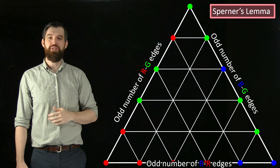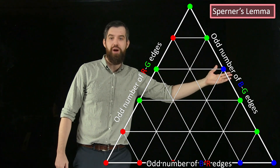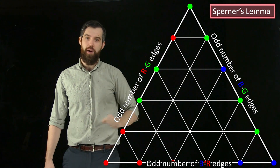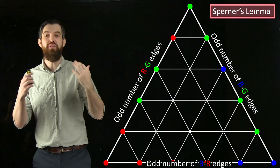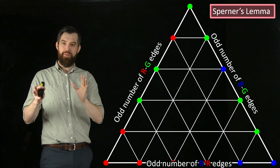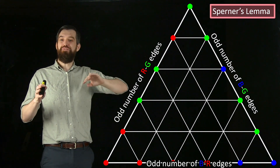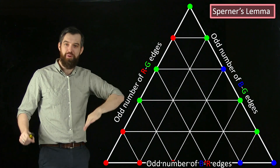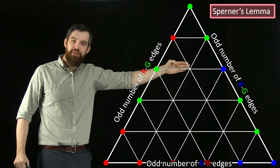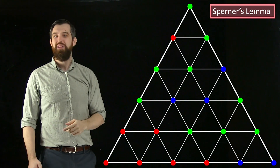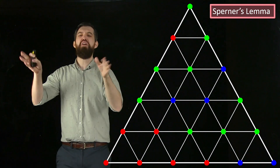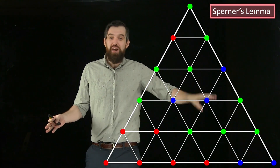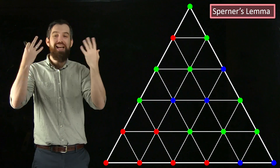Likewise, there's going to be an odd number of blue-green edges on one side and an odd number of blue-red edges along the bottom. So we've got all these odd numbers. That was figuring out the far outside and edge vertices. What about the middle? The middle — do whatever you want. As long as they're red, green, and blue, you can fill them in however you like.